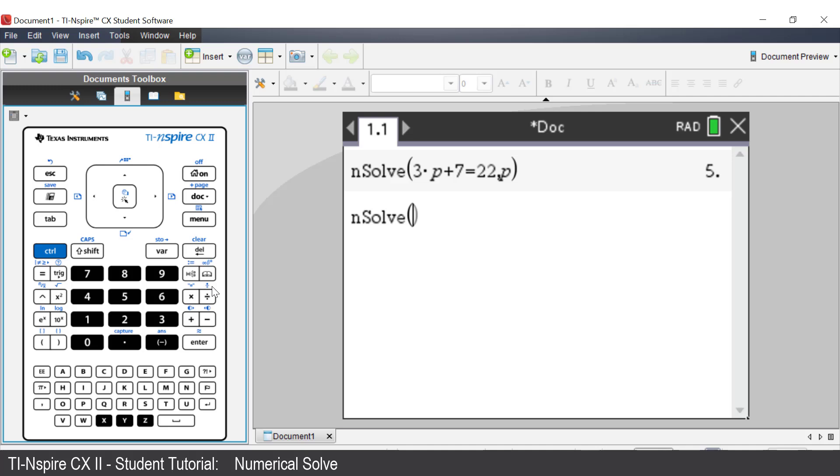To access the fraction template, press the control key, then press the division key. Enter x plus 1, then use the down arrow to enter 3. Use the right arrow to move out of the denominator, and then press the equal key, then x plus 5.